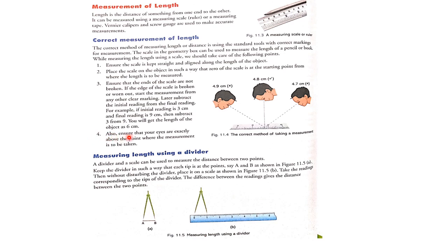Number four: ensure that your eyes are exactly above the point where the measurement is to be taken, not on the side. The correct method requires your eye to be directly above the measurement point, not viewing from an angle.